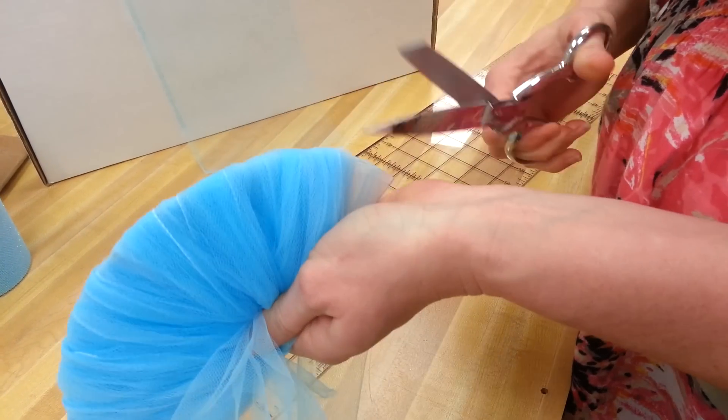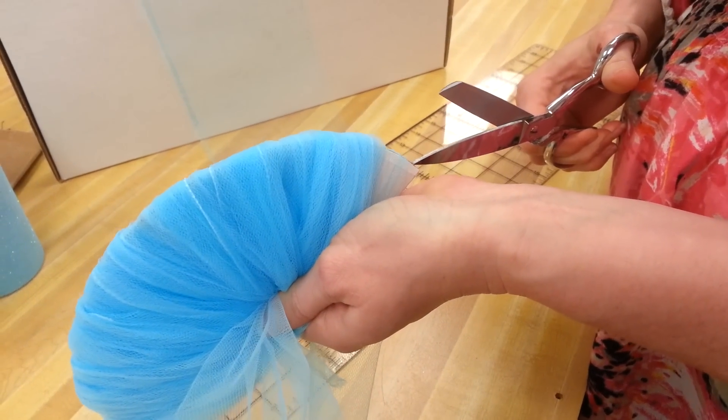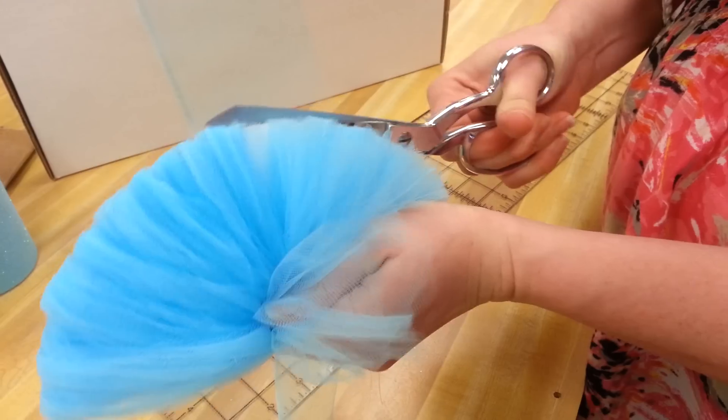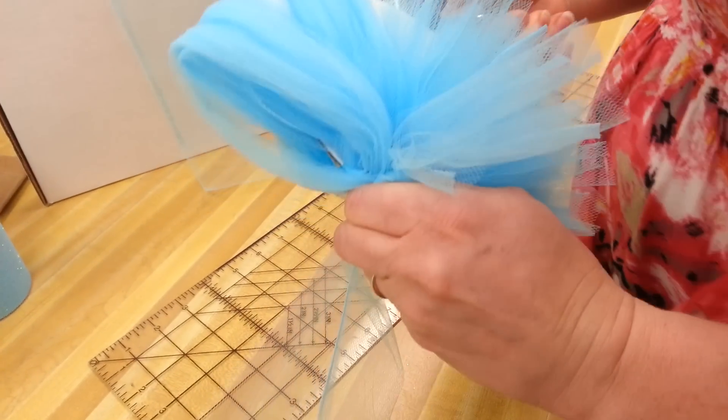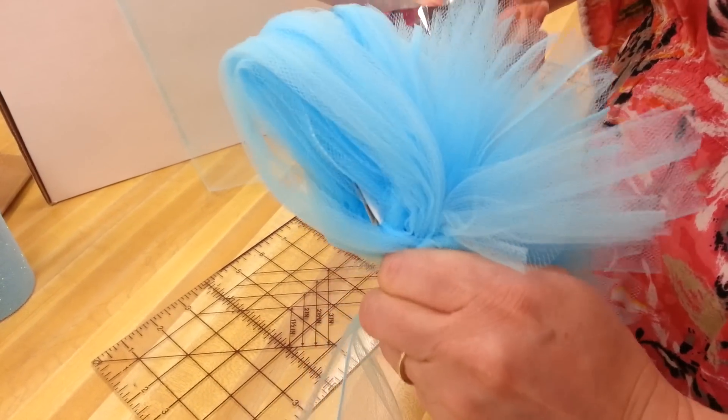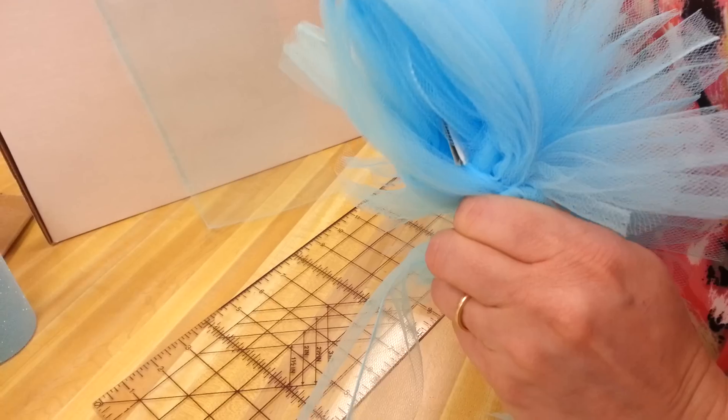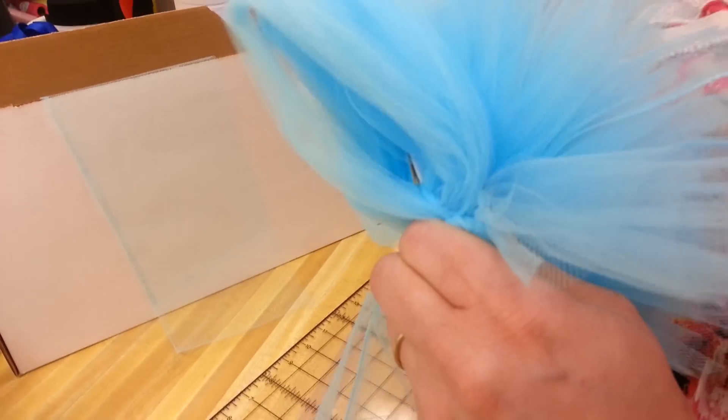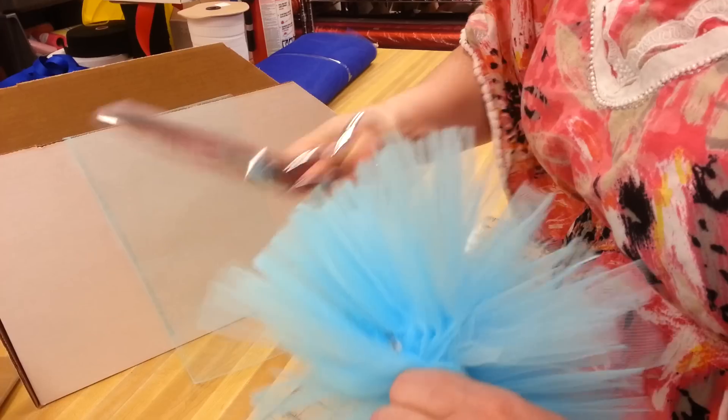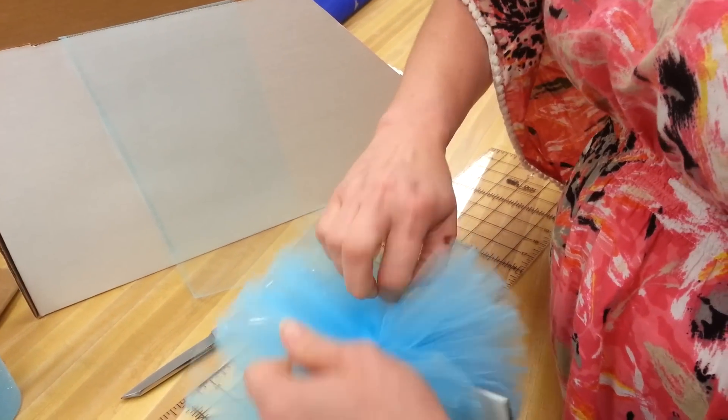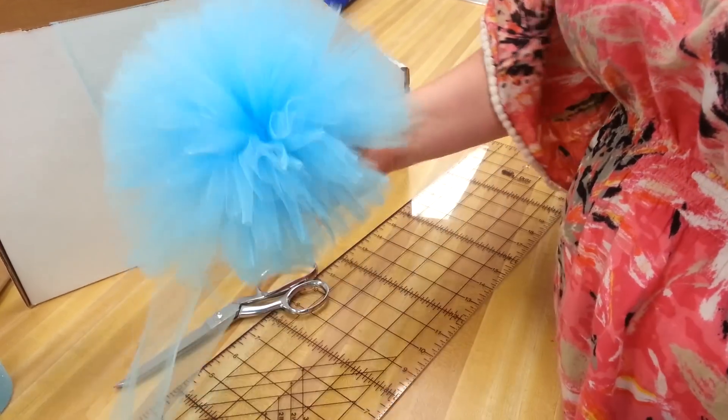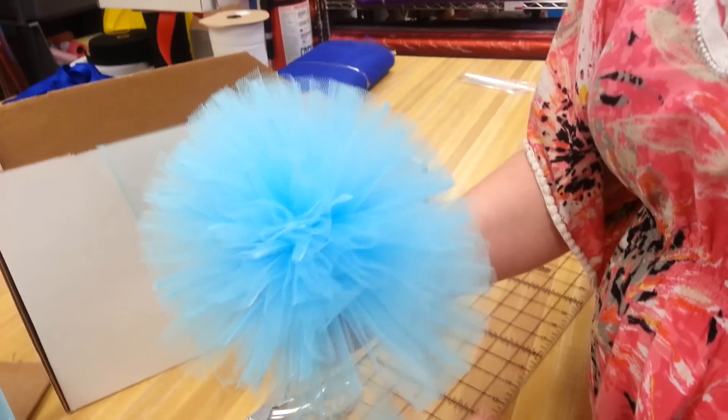Now take your scissors—you really want to have some good sharp scissors—and start cutting all the way around. Oops, mine slid off, so I'll just go in there. Tighten your knot and pull it off your form, and now you have a tulle pom-pom.